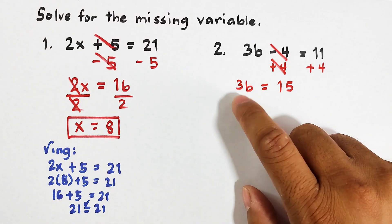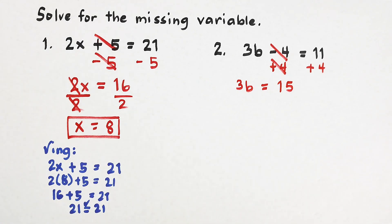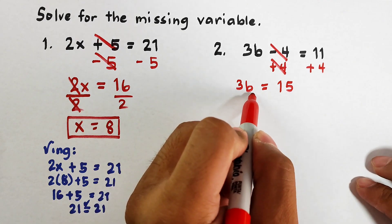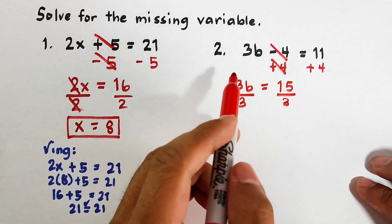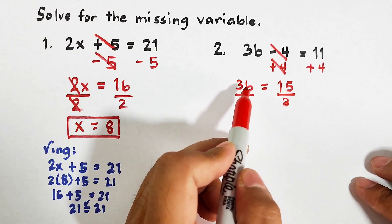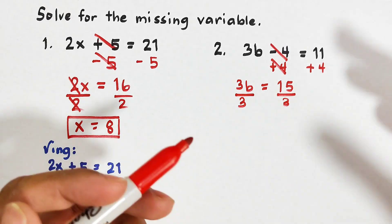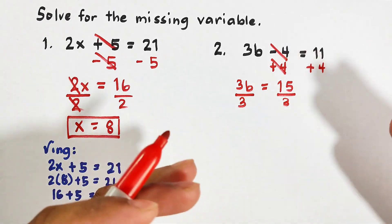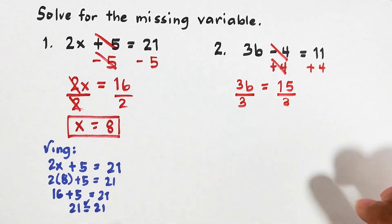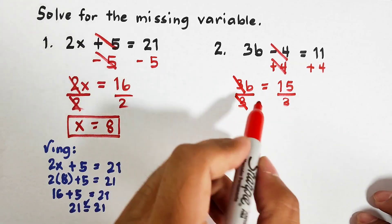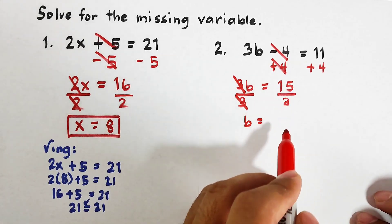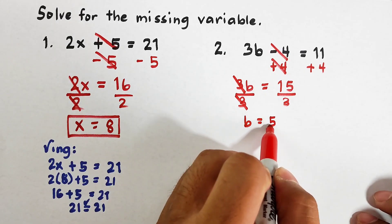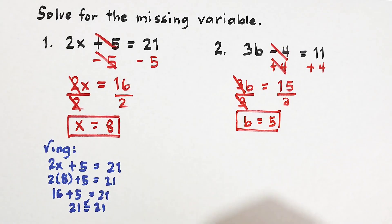The coefficient 3 is beside the variable b, and 3 and b implies multiplication. Since the inverse operation of multiplication is division, we divide both sides of the equation by 3. So 3 divided by 3 cancels out, and b is equal to 15 divided by 3, which is 5. Now to check whether the answer is correct, we do the checking.